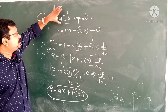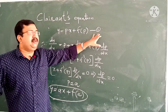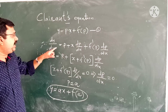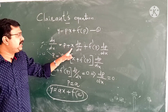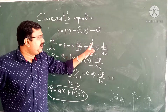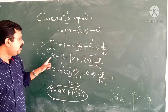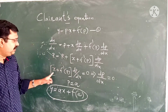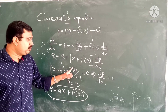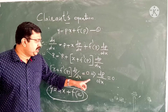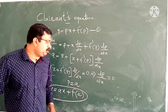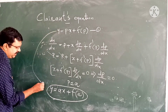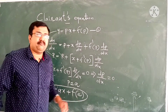Our Clairaut equation is y equal to px plus f of p, equation number 1. Differentiating equation number 1 with respect to x, we get dy by dx equal to p plus x into dp by dx plus f dash p into dp by dx. Since dy by dx is p, p and p cancel. Then we get x plus f dash p into dp by dx equal to 0. Therefore dp by dx equal to 0, which means p is a constant. From equation number 1 we get y equal to ax plus f of a. Please write down on your notebook.